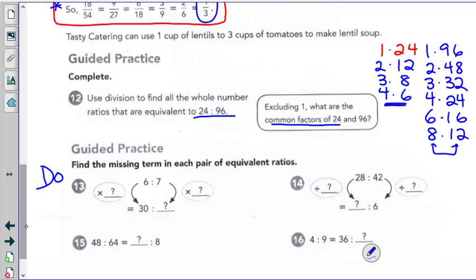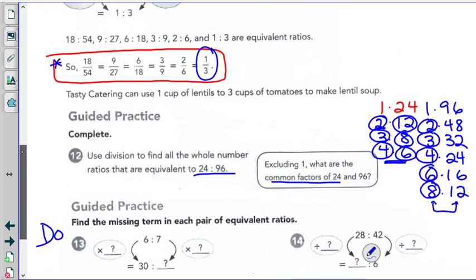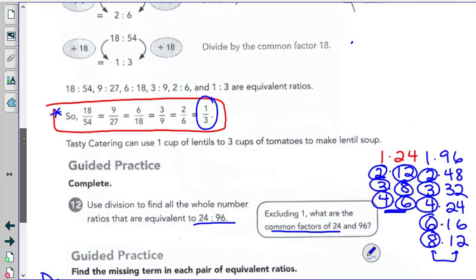Now, what do they have in common? 2, 3, 4, 6, 8. Ooh, they have lots of things in common. So you might want to go up to the white space up here. 24, 24 to 96 can be divided by 2. So I'm going to divide by 2, and you get 12 to 48.